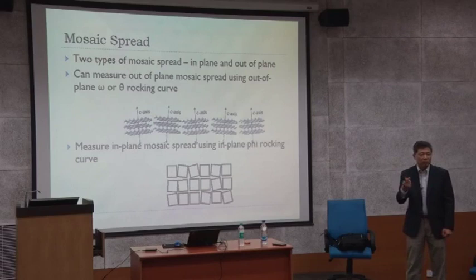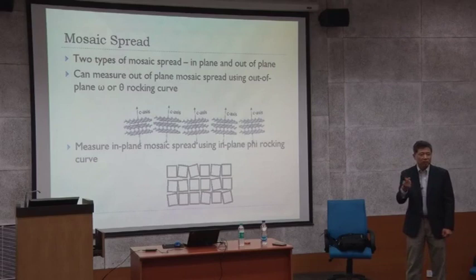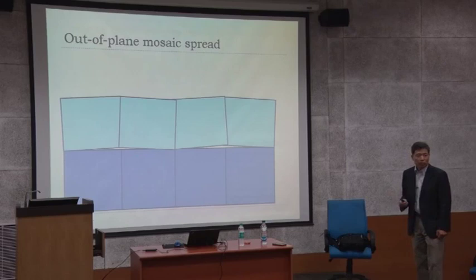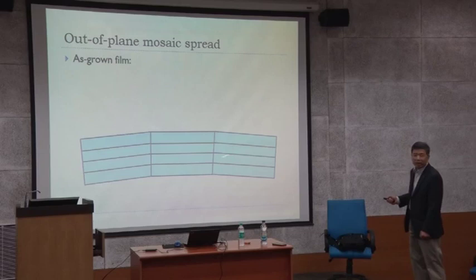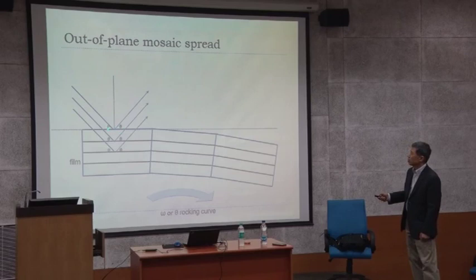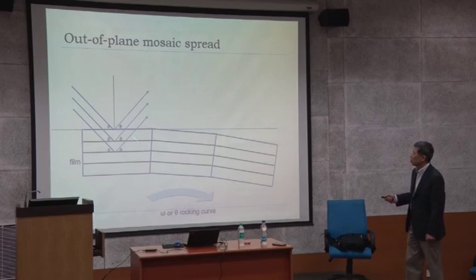From the side view, you see this kind of mosaic spread. Measuring this kind of mosaic spread uses the rocking curve. And for this kind of mosaic spread — in-plane — you have to do a phi scan. Out of plane mosaic spread: you have this kind on a perfect single crystal substrate. Different grains each satisfy different Bragg conditions. For example, with three different grains, the first one meets the Bragg condition at a particular theta, but the other two are out of Bragg condition.